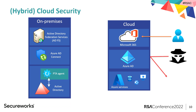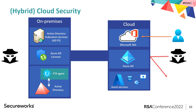With hybrid identity, to make it easier for users to use the same credentials on-prem and in the cloud, you need to connect on-prem to cloud. This is much easier for bad guys, because they have a lot of ways to compromise your on-prem servers. When they do that, they can compromise your identity, and with that identity compromise everything you have in the cloud.